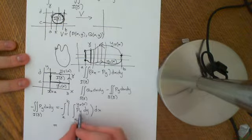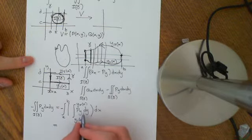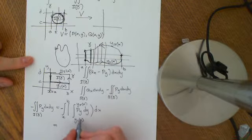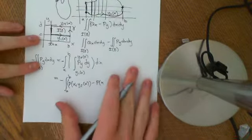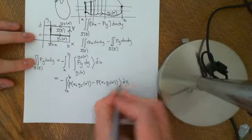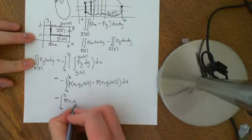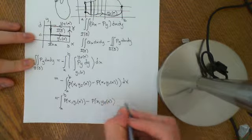Since py is the partial derivative of p with respect to y, by the second fundamental theorem of calculus the antiderivative is just p. So we get minus the integral from a to b of [p(x, y2(x)) minus p(x, y1(x))] dx, which equals the integral from a to b of [p(x, y1(x)) minus p(x, y2(x))] dx.